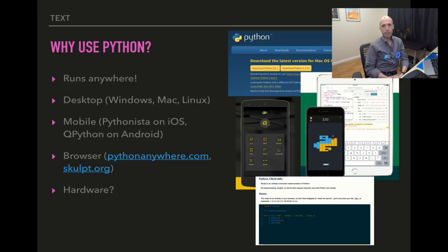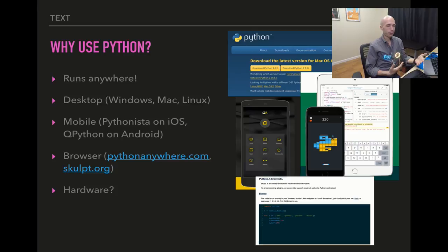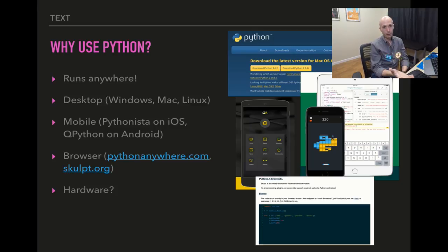There's even Python in the browser. You can go to pythonanywhere.com, which will take Python code that you type in, run it on a server, and send you back the results. There's also skulpt.org, which is actually a Python interpreter that runs entirely in your web browser in JavaScript. It has a few more limitations but it's still pretty cool — you can just open your phone, go to skulpt.org, and start typing Python and see the results.